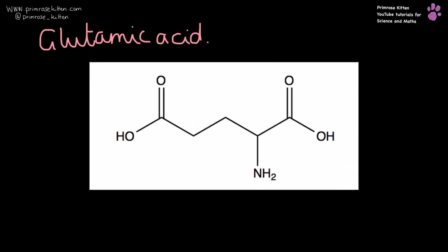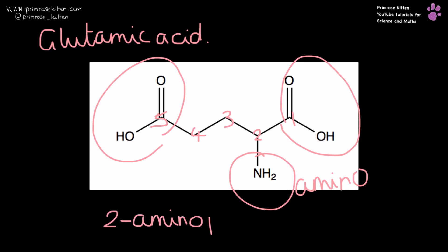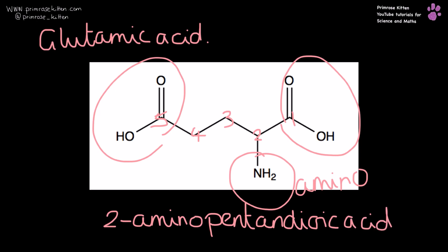Glutamic acid. We have acid groups here and here, and an amino group here. Numbering again from the right-hand side so we get the lowest numbers possible: one, two, three, four, five — 2-aminopentanedioic acid.